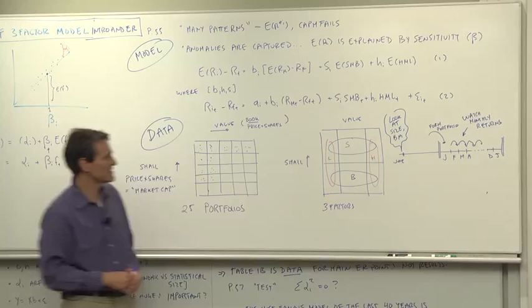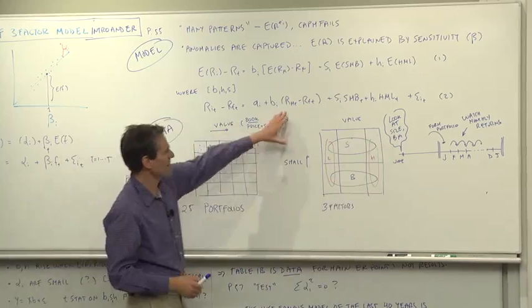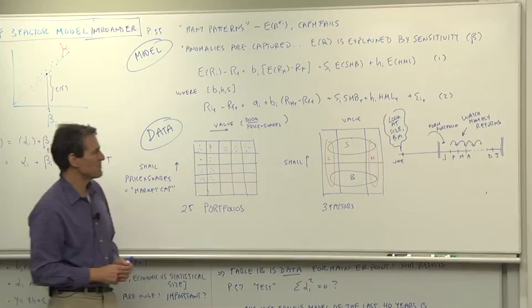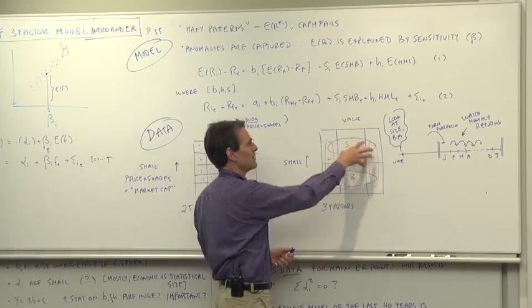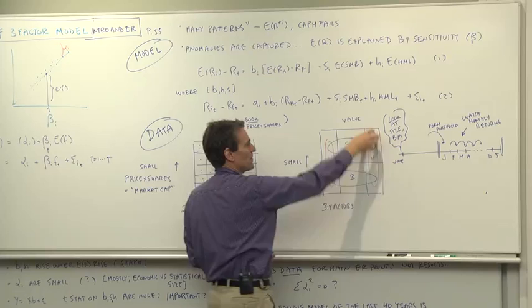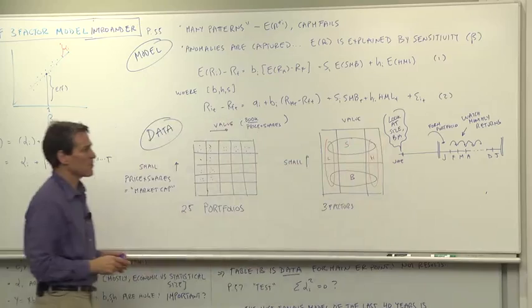Correspondingly, in the same method, they form the factors in the same way. The market factor is, of course, all stocks put in together, value weighted. The HML and SMB portfolios are long-short portfolios on the same dimensions. So the SMB portfolio takes the small stocks and subtracts off the returns of the large stocks. The HML portfolio takes a combination of the value stocks and subtracts off a proportion of the growth stocks. So those are the players.